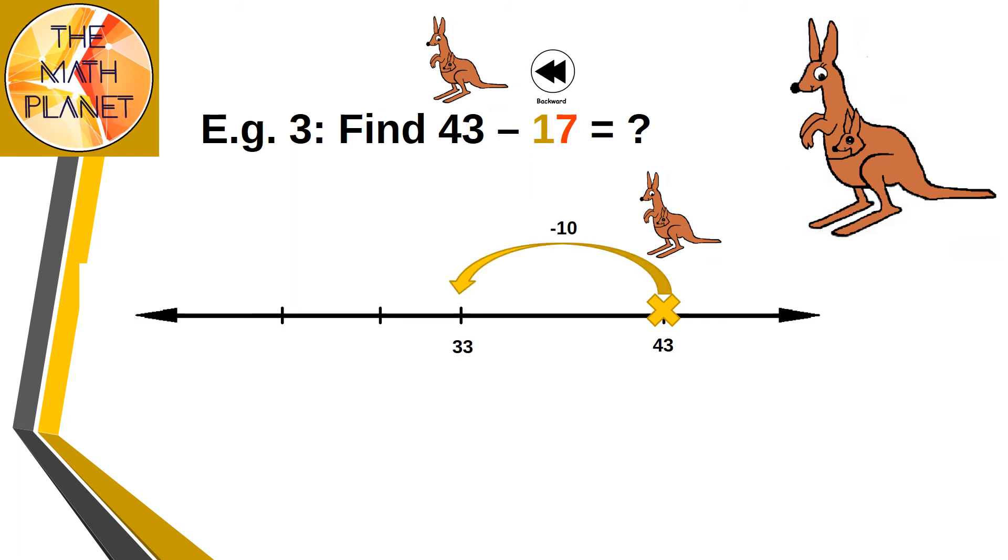Minus 10, we will reach at 33. Then I will subtract 7 ones. I will subtract 3 ones to reach at 30, then another 4 ones to reach at 26. So my destination point is 26, which is the difference.